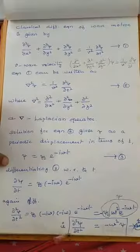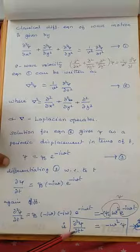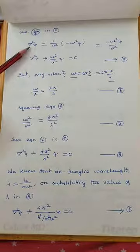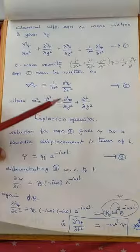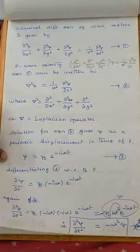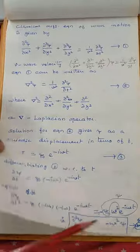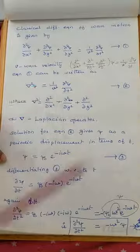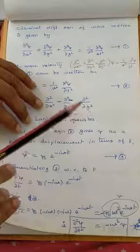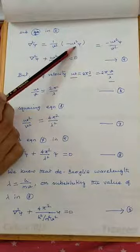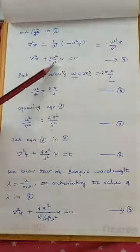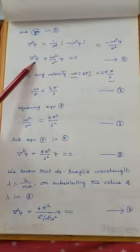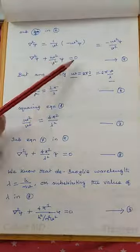We now substitute ∂²ψ/∂t² = −ω²ψ into the classical wave equation ∇²ψ = (1/v²)(∂²ψ/∂t²). This gives ∇²ψ = (1/v²)(−ω²ψ) = −(ω²/v²)ψ. Rearranging, since it is a negative term, we bring it to the left: ∇²ψ + (ω²/v²)ψ = 0, where v is the wave velocity and ω is the angular velocity.